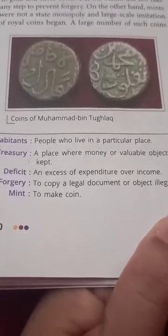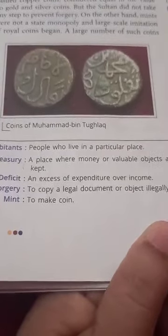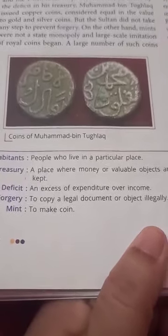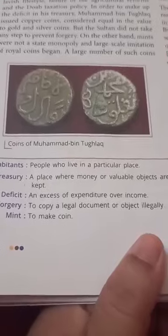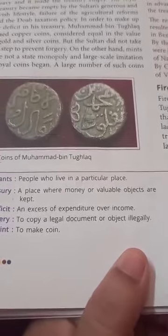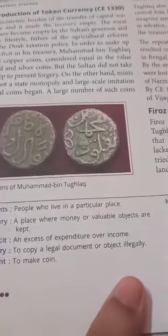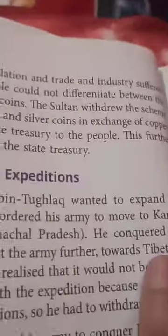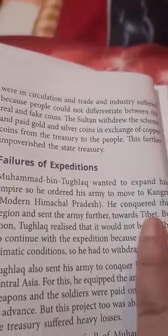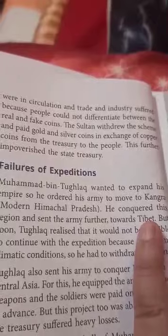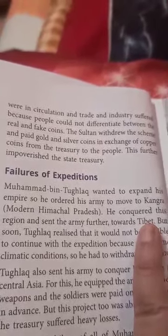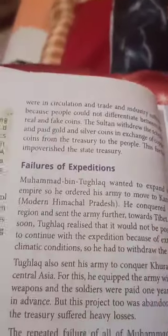You can see the definition on screen. On the other hand, mints were not a state monopoly, and large-scale imitation of royal coins began — people started making coins on their own. A large number of fake coins circulated, and trade and industry suffered because people could not differentiate between real and fake coins. So the Sultan withdrew the scheme and paid gold and silver coins in exchange for the copper coins. Another failure.